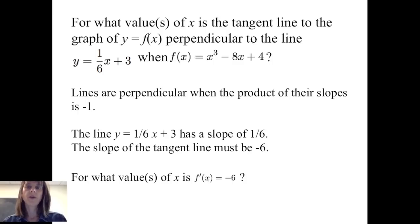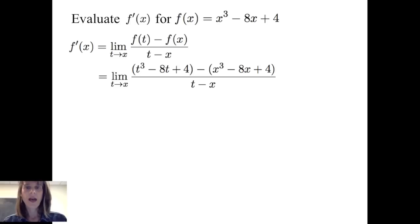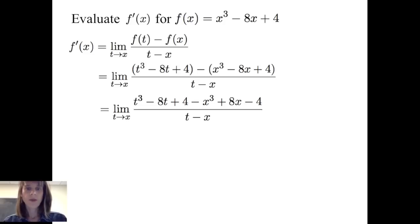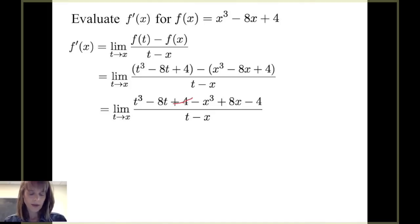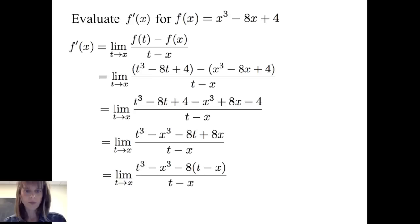To reach that goal, I have to first evaluate the derivative of f with respect to x using the limit definition: the limit of f of t minus f of x divided by t minus x as t approaches x. Evaluating the function at t and x and finding their difference in the numerator gives t cubed minus 8t plus 4 minus x cubed minus 8x plus 4, all divided by t minus x as t gets close to x. Clearing parentheses, the positive 4 and negative 4 cancel, leaving t cubed minus x cubed minus 8t plus 8x divided by t minus x. Grouping like terms and factoring out negative 8 from the 8t and 8x terms.